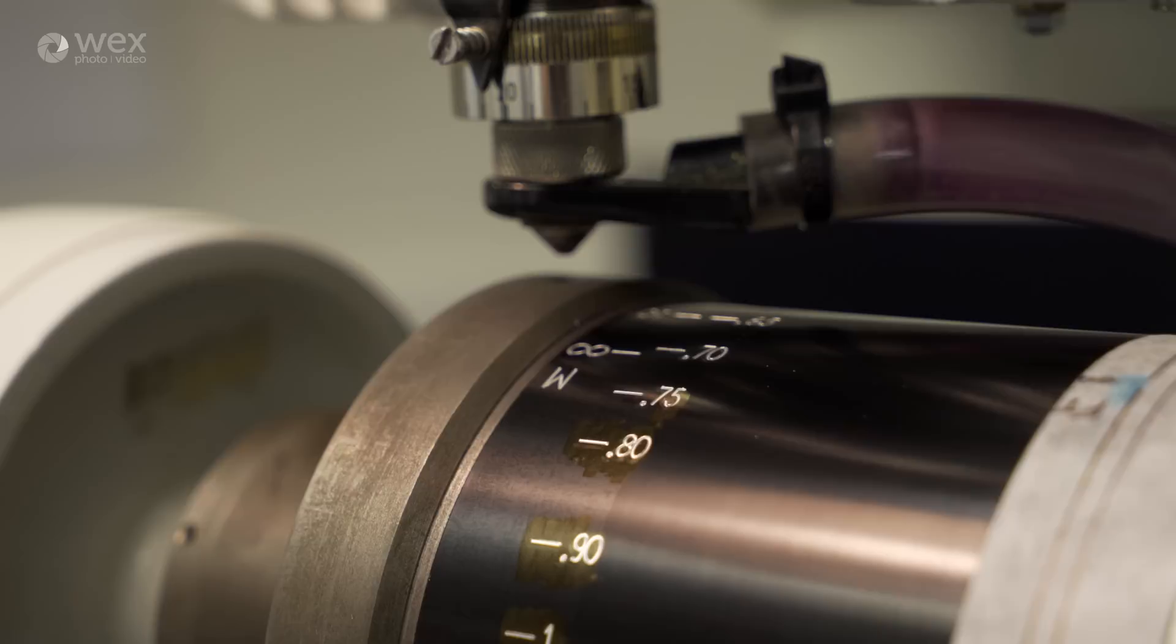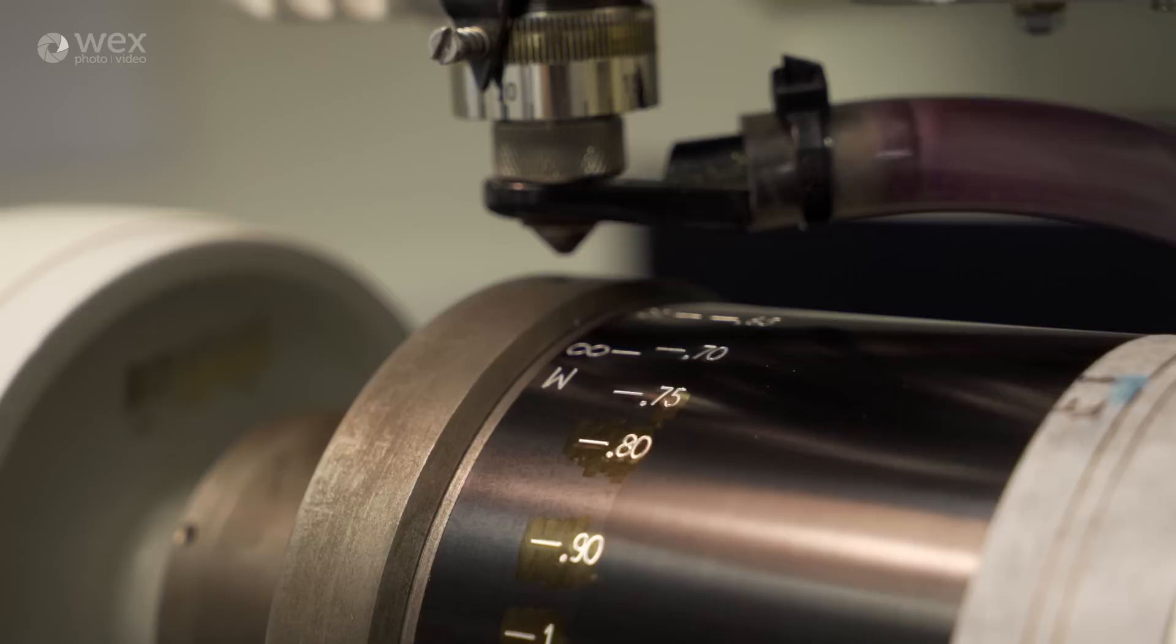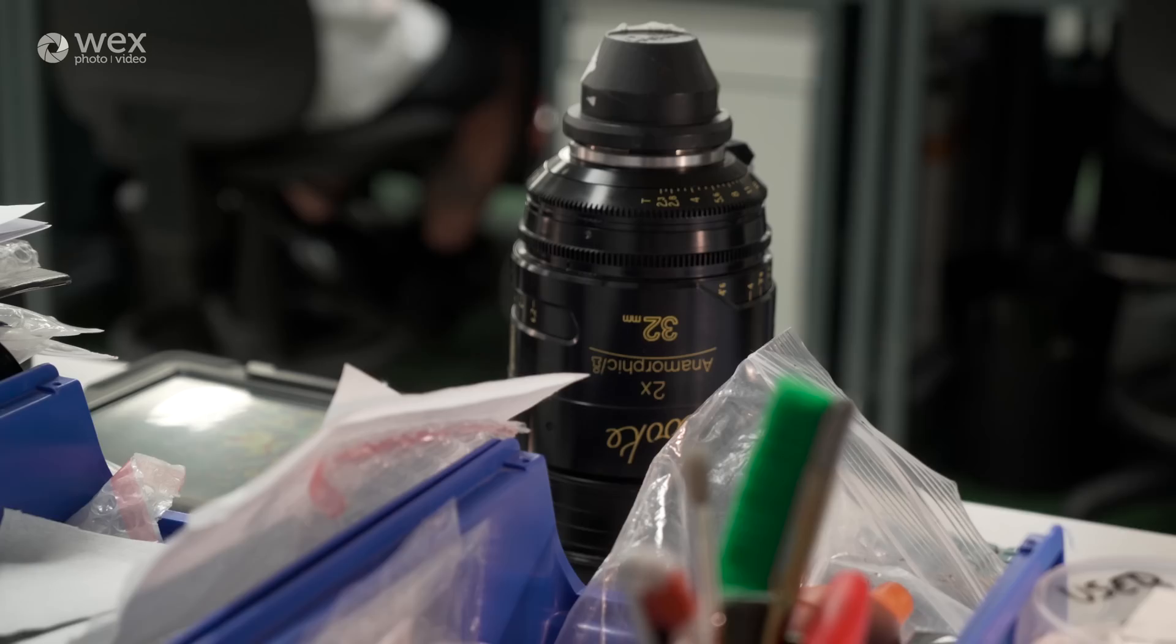Now what's interesting with Cook is that they don't make all these lenses in batch. They won't do, say, 20-50mm S4s in one go, and then move on to another focal length. Instead, if you order a set, they will make that whole set to order, all in the one go to ensure consistency throughout the different lenses.